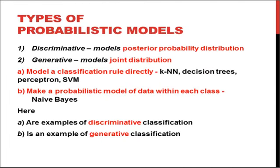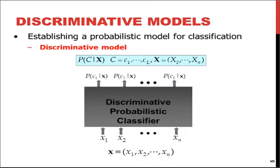To understand this, we have two types of probabilistic models: discriminative and generative. Discriminative probabilistic models are based on the posterior probability distribution, while generative models are based on the joint probability distribution. Classification models like KNN, Decision Trees, Perceptron, and SVM are typically discriminative models, while the Naive Bayes classifier is a generative model — it generates new instances and finds the probability of those new instances.